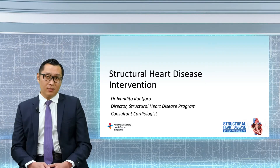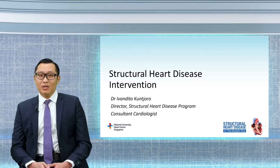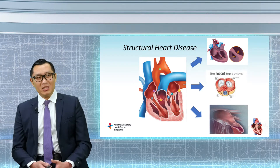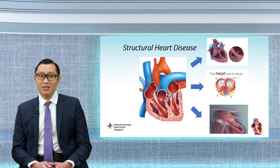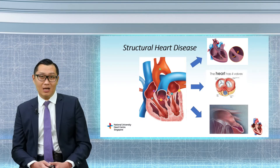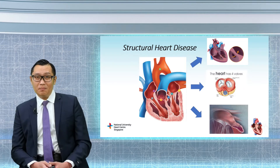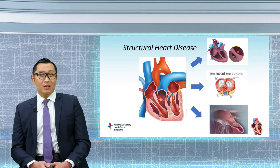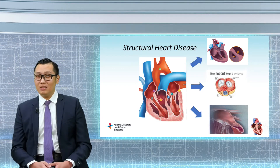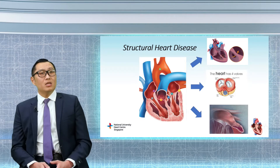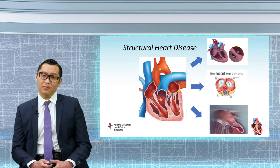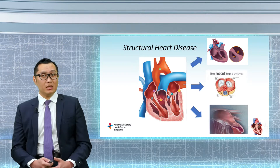A lot of you are probably quite familiar with what we call coronary heart disease, which basically means having a blockage in the heart, and ballooning and stenting is commonly done for this problem. Also quite commonly known, people can have irregular heartbeat. But not many of you are aware about structural heart disease. What we mean by structural heart disease is basically any form of heart disease that involves an abnormality or defect in the structure of the heart. As you can see in the picture on the top right, people can have a defect on the wall inside the heart, which is basically called the septum.